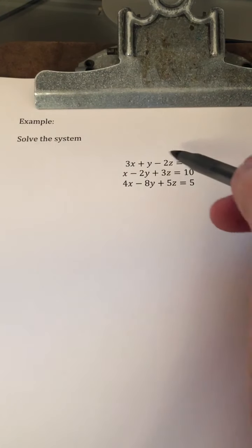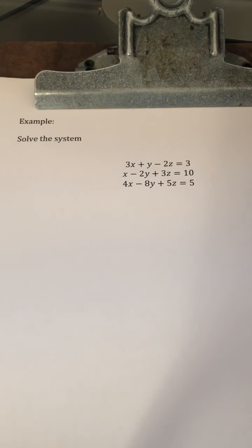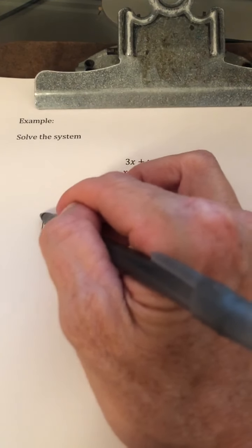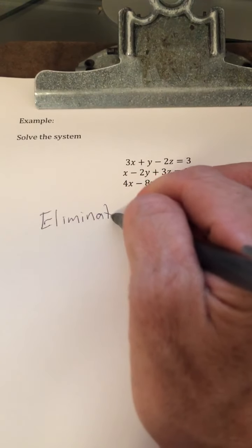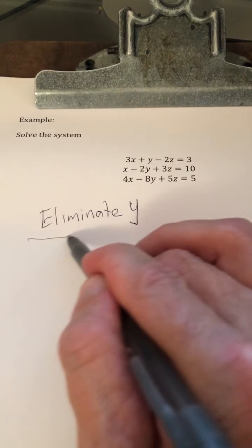So what we want to do is eliminate a variable. We're going to pick whichever variable you think is easiest to eliminate. It doesn't really matter which one, but in this particular case, for this problem, I think we want to eliminate y. So it's important that we write down what we're trying to do.